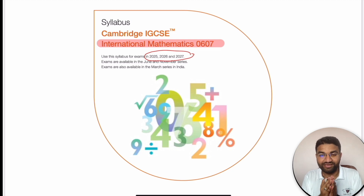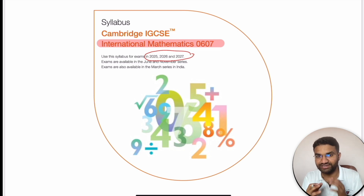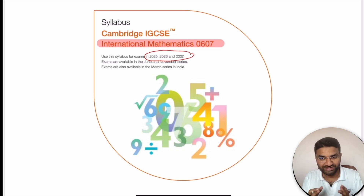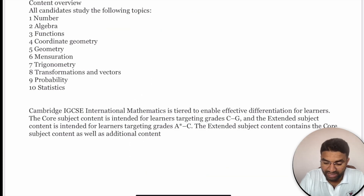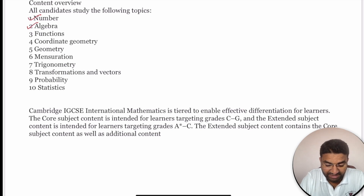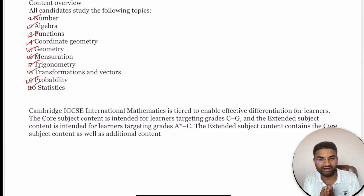If you haven't subscribed yet, subscribe to our channel. Congratulations to our students who got an A* grade — many of our students achieved A* in International Mathematics. For this subject you have 10 topics: Number, Algebra, Functions, Coordinate Geometry, Geometry, Mensuration, Trigonometry, Transformation and Vectors, Probability, and lastly Statistics. Subtopics we will discuss subsequently in the video.